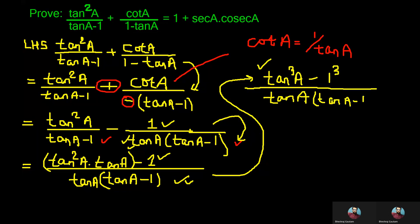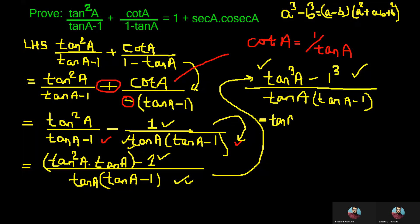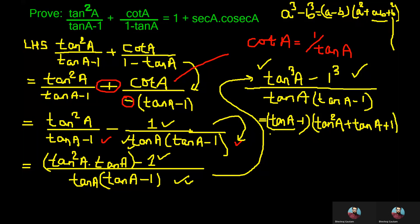Now we can apply the formula a³ minus b³ = (a minus b)(a² + ab + b²) to the numerator tan³a minus 1. We write (tan a minus 1) in place of (a minus b), then in the second bracket, tan²a in place of a², plus tan a·1 which is simply tan a, plus 1² which equals 1. The whole expression is divided by tan a·(tan a minus 1) in the denominator.